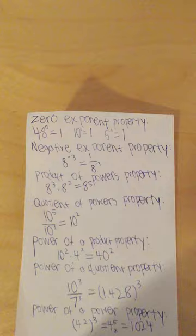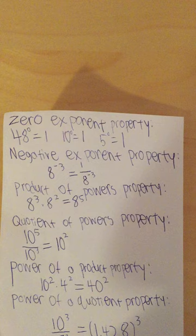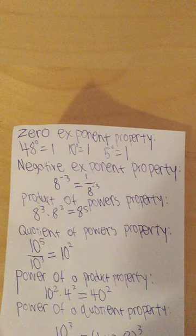The first equation is for the zero exponent property, and you can see I have several examples. 48 to the zero power equals 1, 10 to the zero power equals 1, and 5 to the zero power equals 1. No matter what you put in, it will always be 1. There are no exceptions to this rule.